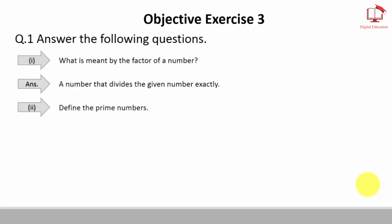Part 2. Define the prime numbers. Answer: A number having exactly two factors, 1 and the number itself.